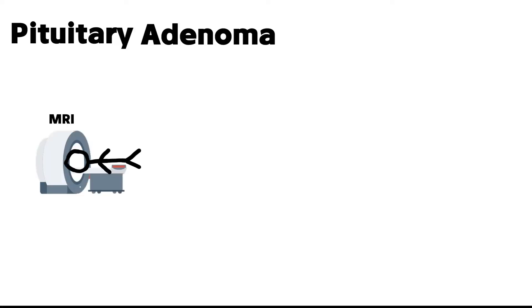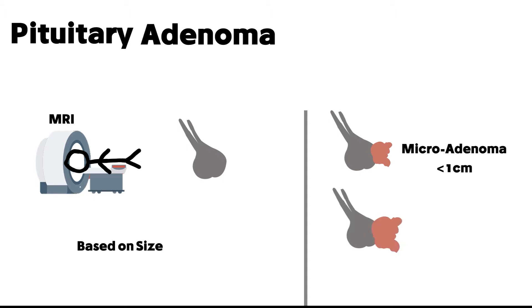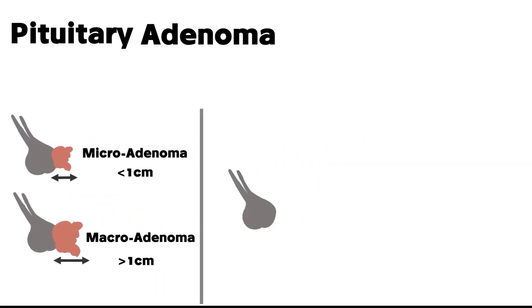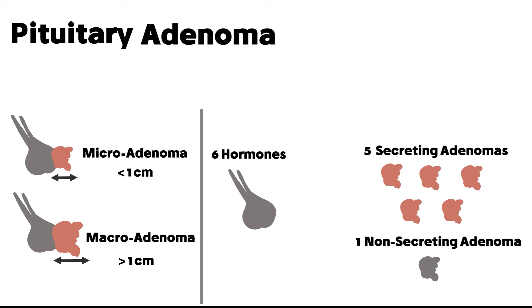Pituitary adenoma is diagnosed with MRI. When a patient gets an MRI scan, the adenoma will be classified based on size. If the size of the tumor is less than one centimeter it will be called a micro adenoma, and if it is bigger than one centimeter it will be called macro adenoma. The pituitary gland itself is one centimeter in diameter.